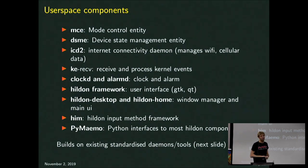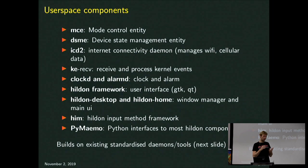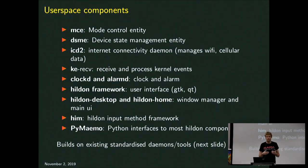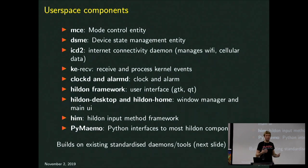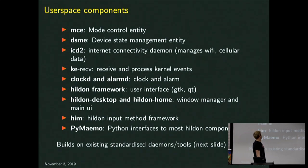ICD2 is the connectivity daemon, like network manager on Linux. It manages your wireless connectivity, USB network, 2G, LTE — whatever connection — and it's written with power savings in mind, so it only scans every 15 or 30 minutes, or only activates when an application actually wants to use the Internet. If you have a phone, you don't want the radio always active for data because it drains the battery very quickly. There are also daemons to receive events from the kernel if you're plugging in cables. ClockD and AlarmD are for clock and alarm.